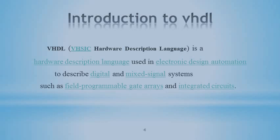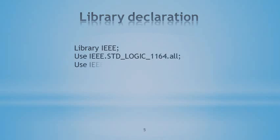We are going to start our design with library declaration. We use library IEEE, use IEEE STD_LOGIC_1164 all, and use IEEE STD_LOGIC_UNSIGNED all. After doing the library declaration, we are going to write the entity and the architecture of the design, which are the two main basic programming structures in VHDL.